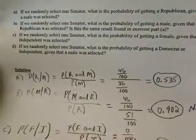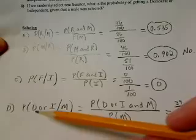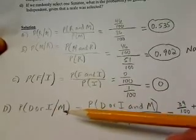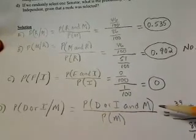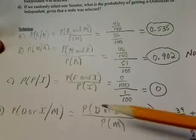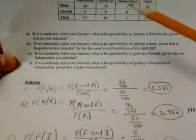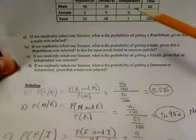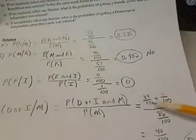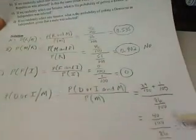In Part D, we're asked: if we randomly select one Senator, what is the probability of getting a Democrat or Independent given that a male was selected? We find the probability of Democrat (D) or Independent (I) given a male (M). In the numerator, we have the probability of a Democrat or Independent and a male, divided by the probability of randomly selecting a male. The number of Democratic males is 39 out of 100, and the number of Independent males is 1 out of 100, so we add 39 over 100 plus 1 over 100. We then divide by the probability of selecting a male, which is 86 out of 100.